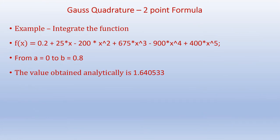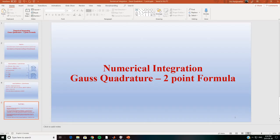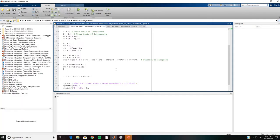To illustrate this two-point formula, we will do an example in MATLAB. We would like to integrate the function f(x) shown here between the limits a equals 0 and b equals 0.8. The value obtained analytically is 1.640533. The MATLAB code for the Gauss Quadrature two-point formula is given here.